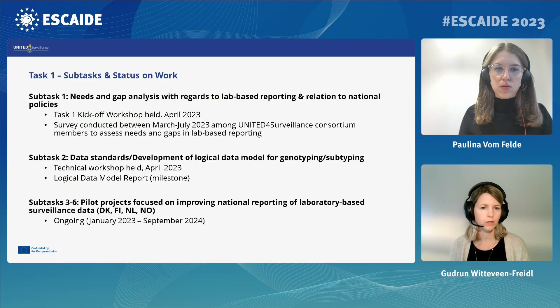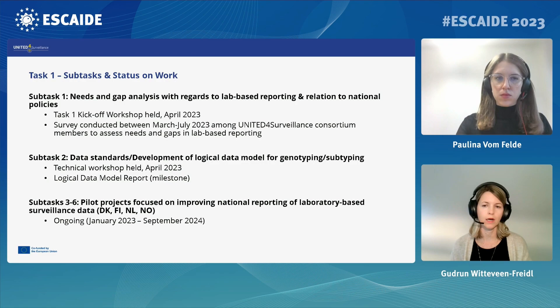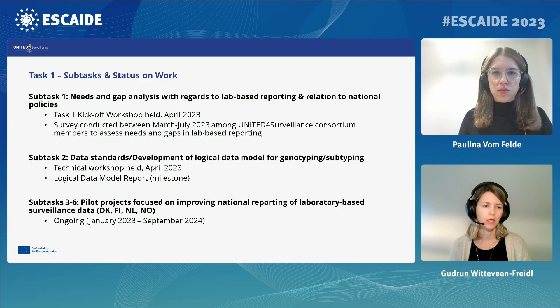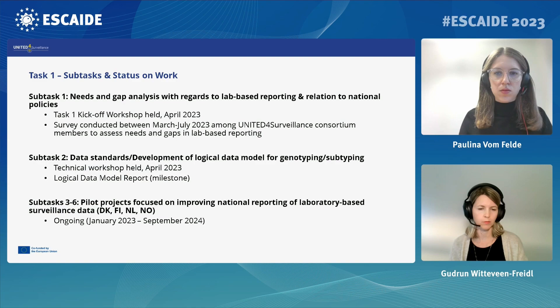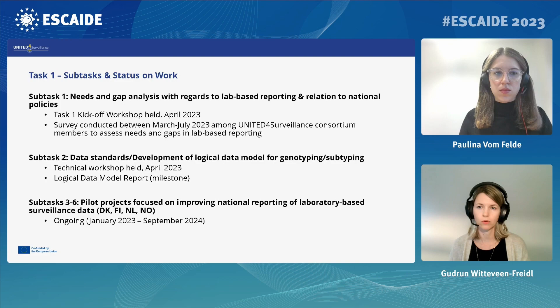Task 1 is subdivided into six subtasks. Subtasks 1 and 2 involve multiple countries; subtasks 3 to 6 are nationally focused pilot projects in Denmark, Finland, Norway, and the Netherlands based on previously identified gaps. On Subtask 1 — needs and gap analysis for lab-based reporting — a kickoff workshop was held in Denmark in April 2023 where selected countries presented on their laboratory-based reporting systems and challenges. A survey was also conducted across the United for Surveillance Consortium to assess needs and gaps. Subtask 2 focused on data standards, developing a logical data model for genotyping and subtyping, producing a milestone report summarizing findings with input from various countries.